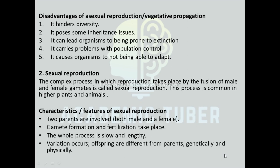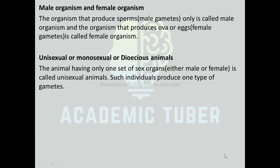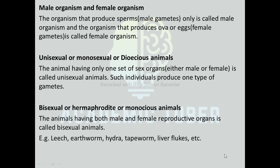Characteristics of sexual reproduction: Two parents are involved — both male and female. Gamete formation and fertilization take place. The whole process is slow and lengthy, and variation occurs, so offspring are different from parents genetically and physically. The organism that produces male gametes only is called a male organism. Unisexual or Dioecious animals have only one set of sex organs, either male or female, and produce one type of gamete. Bisexual or Hermaphrodite or Monoecious animals have both male and female reproductive organs — examples include Leech, Earthworm, Hydra, Tapeworm, and Liverwort.